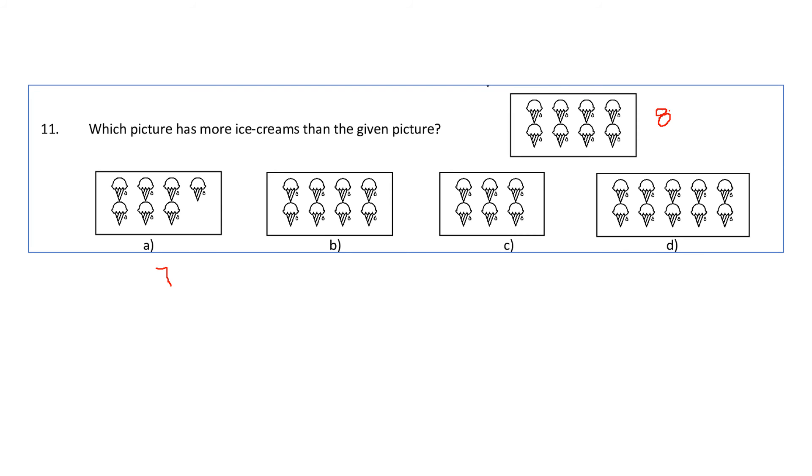In B, 1, 2, 3, 4, 5, 6, 7, 8 ice creams are there. In this, 1, 2, 3, 4, 5, 6 ice creams. In this, 1, 2, 3, 4, 5, 6, 7, 8, 9, 10 - here there are 10 ice creams. The only number which is greater than 8 here is 10. So D will be the correct option. This D has more number of ice creams than the given picture.